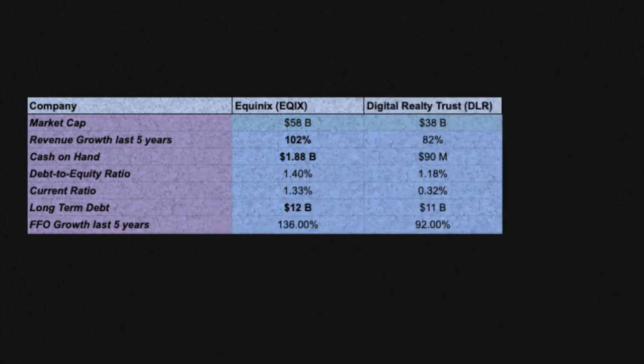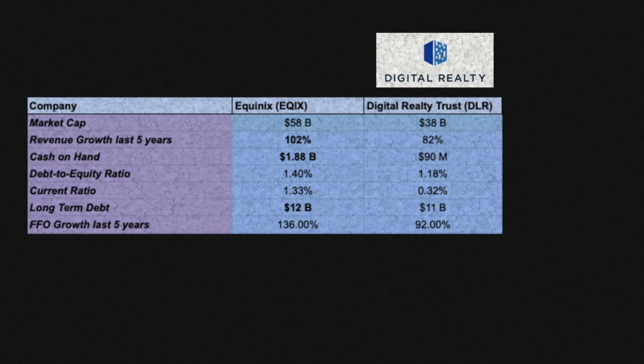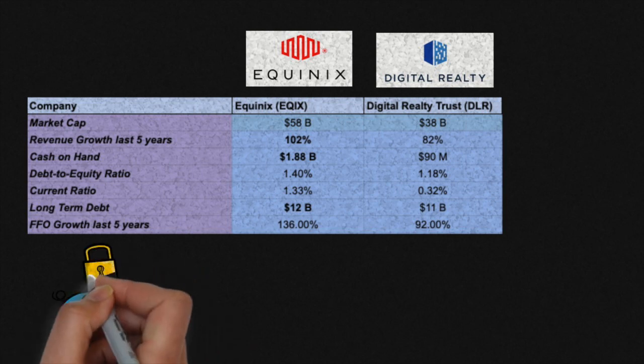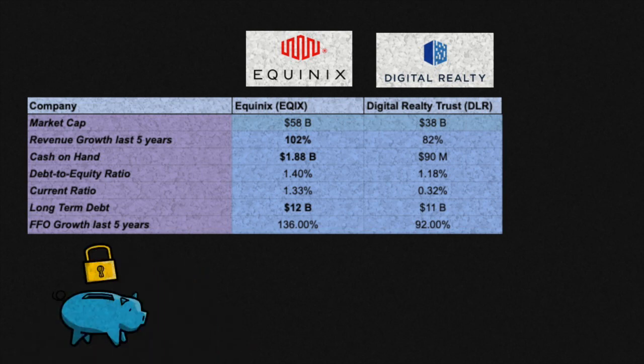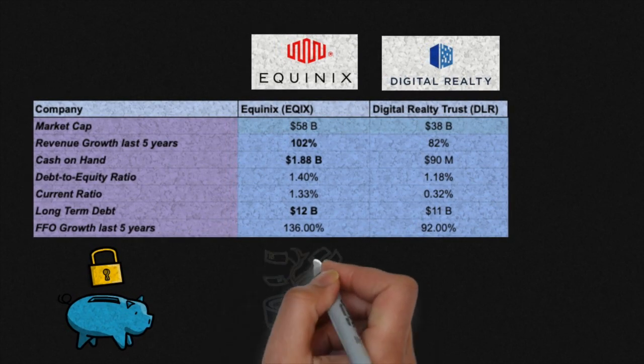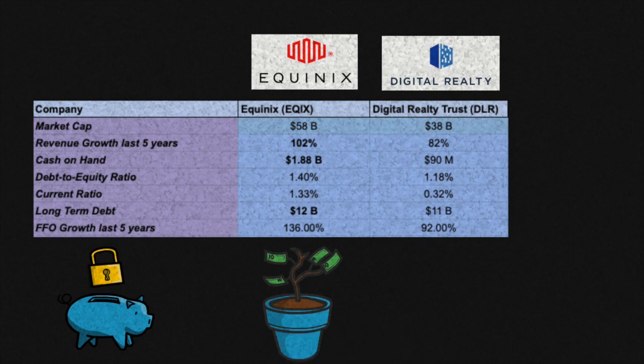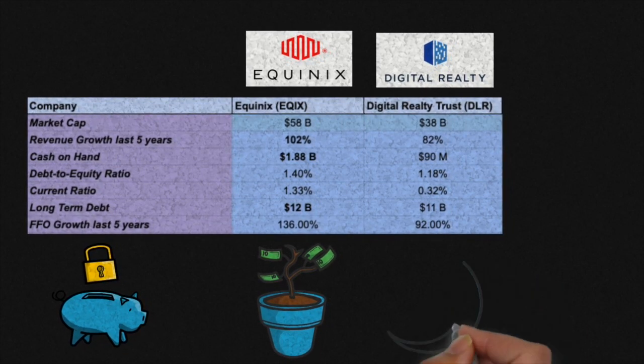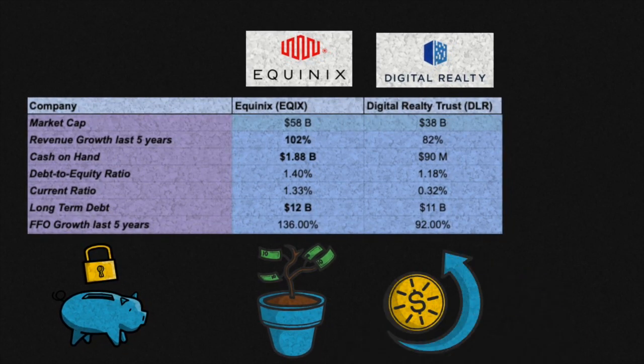Looking closer at its financials, we'll compare it to its next closest competitor, Digital Realty Trust. And as we're going to see, there really just isn't much of a fight between these two companies. Equinix is the bigger company at the time of this recording, having a $58 billion market cap compared to DLR's $38 billion. And don't let Equinix's near $700 stock price intimidate you. Stock price actually doesn't really matter. It's the market cap that determines how big a company is.